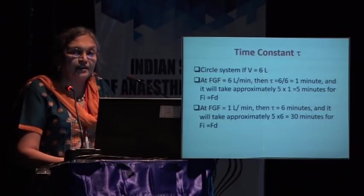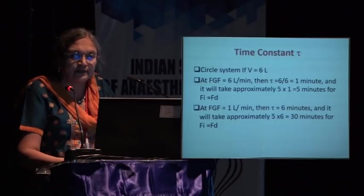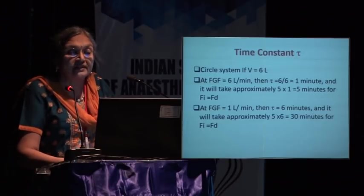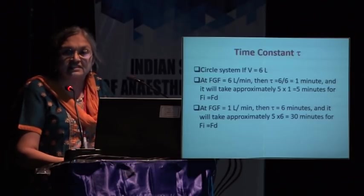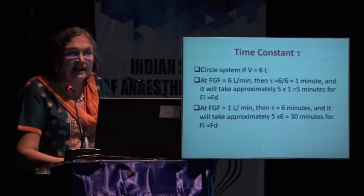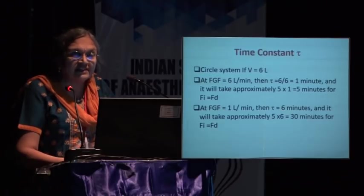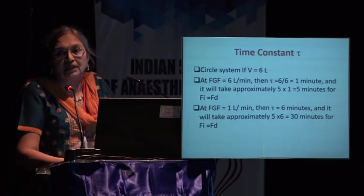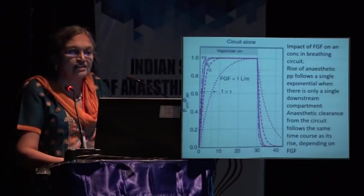If fresh gas flow is reduced to just 1 liter per minute, tau becomes 6 liters divided by 1 L/min = 6 minutes. Five time constants would then take 30 minutes. This is the reason we say we must start with a high fresh gas flow initially and then reduce to lower flows. PG students should now understand why high initial fresh gas flow is clinically important.